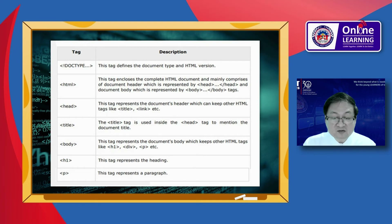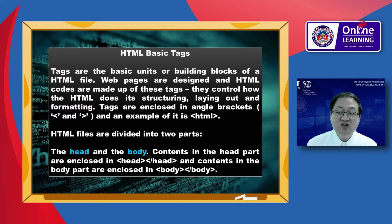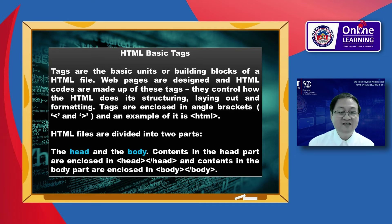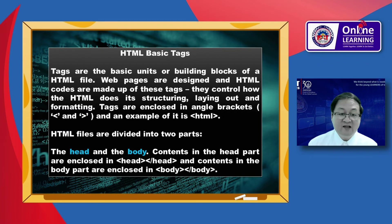The h1 tag represents the heading and the p tag represents a paragraph. HTML basic tags are the basic units or building blocks of an HTML file. Web pages are designed and HTML codes are made up of these tags. They control how the HTML does its structuring, laying out, and formatting. Tags are enclosed in angle brackets — for example, angle bracket HTML followed by the closing angle bracket.